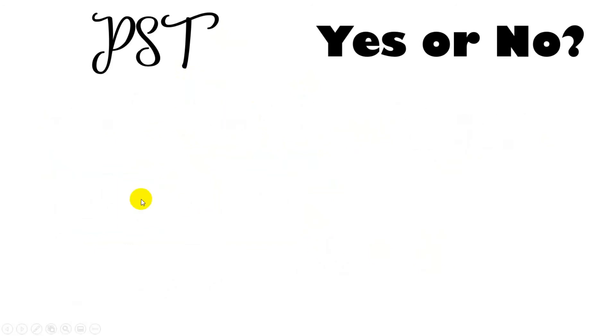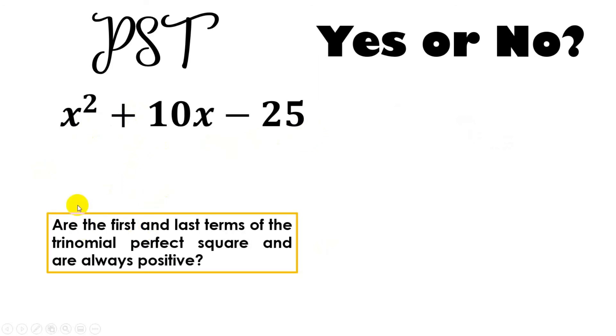Next, let us have x squared plus 10x minus 25. Again, first characteristic, the question is: Are the first and last terms of the trinomial perfect square and are always positive? Is the first term a perfect square? Is the last term also a perfect square? The answer is yes. They are both perfect squares. But, are they both positive? The first term, yes, positive.